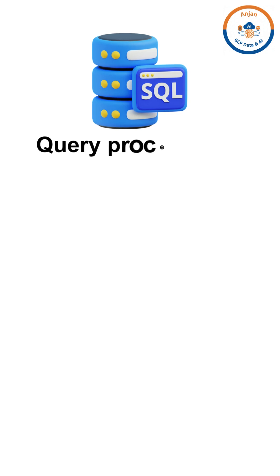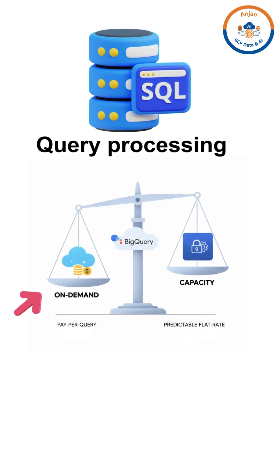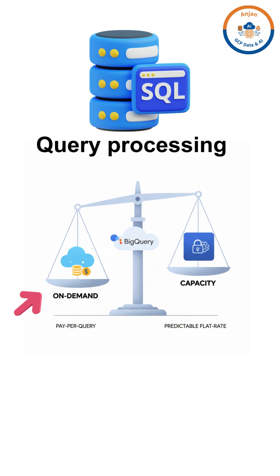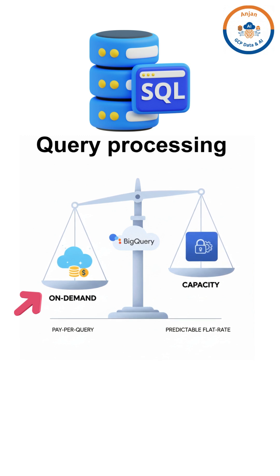Next up, query processing or compute. You get two main pricing models here. First is on-demand pricing, where you pay by the amount of data processed, usually around $6.25 per terabyte scanned. For many users, this is completely free because Google gives you the first 1 TB free every month. The absolute best way to save money here: never use SELECT *. BigQuery is columnar, meaning you only pay for the columns you actively read. If you query all columns, you pay for the whole table — only select what you need.